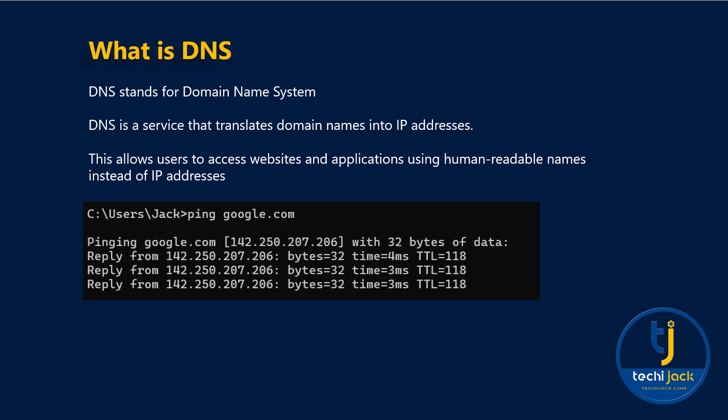Every computer on the internet needs a unique IP address to communicate. Don't you think it would be difficult for anyone to remember IP addresses instead of names? There are millions of websites in the world. Instead of google.com, if I say open 142.250.207.206, and for Amazon open 12.230.227.205 — it would become a very difficult task. So DNS resolves this problem, and this is the overview of what DNS is and why it is needed.